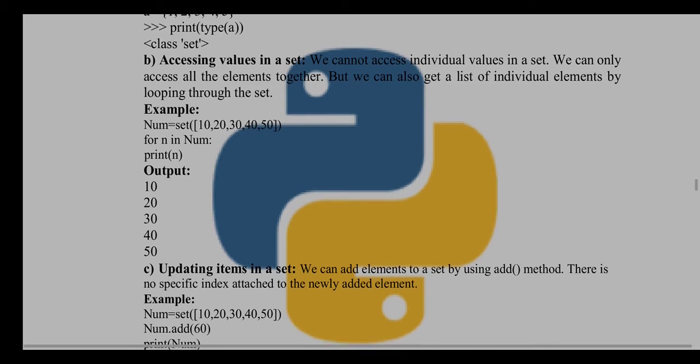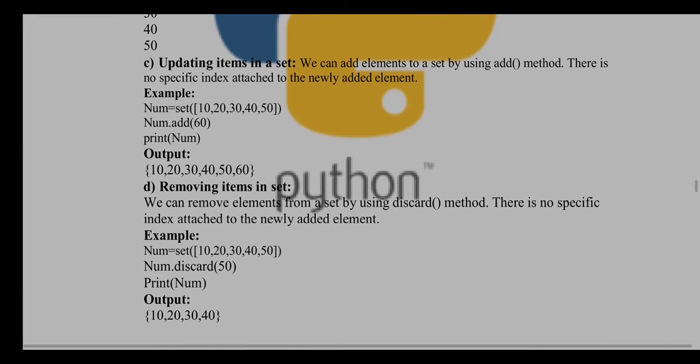10, 20, 30, 40, and 50 is going to be printed. If you want to update the items in a set, we can add element to a set by using add() method. We already have a set, and we are adding a 60 element in that particular set.